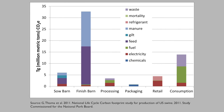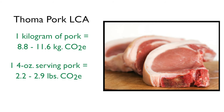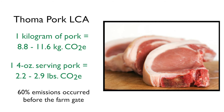Thoma applied the same system to an analysis of greenhouse gas emissions from pork production. This study took into account all activities in the pork supply chain — electricity, fuel, manure, and waste — across all stages from the sow barn to consumption of pork products. The LCA showed CO2 equivalents averaging 8.8 to 11.6 kilograms of CO2 equivalents per kilogram of pork from production to consumption, or 2.2 to 2.9 pounds of CO2 equivalents per 4-ounce serving of pork. Approximately 60% of emissions occurred before the product left the farm gate.